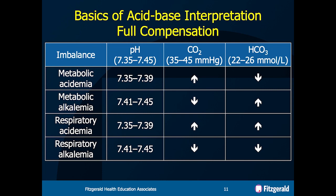Now let's look at full compensations. With full compensations, we're going to start seeing our pH return to normal. These are usually more chronic states. pH 7.35 to 7.45 is normal.